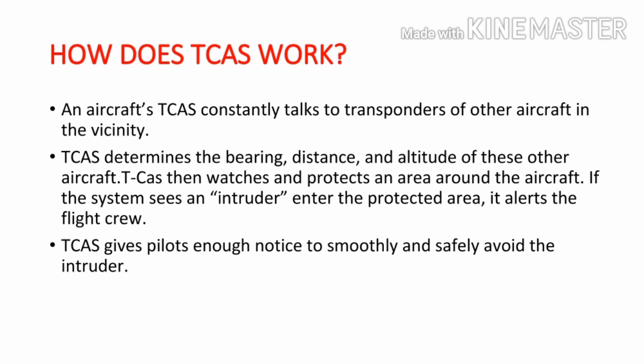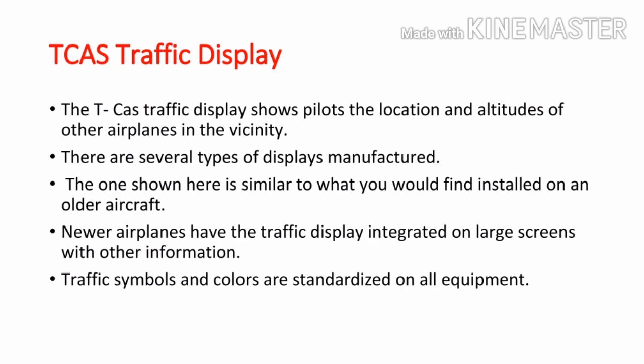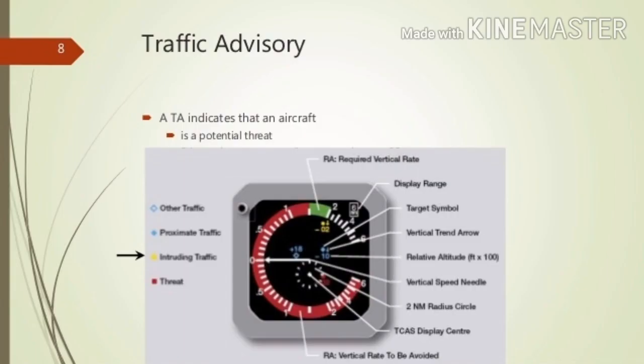TCAS gives pilots enough notice to smoothly and safely avoid the intruder. The TCAS traffic display shows pilots the location and altitudes of other airplanes in the vicinity. There are several types of displays manufactured. The one shown here is similar to what you would find installed on an older aircraft. Newer airplanes have the traffic display integrated on large screens with other information. Traffic symbols and colors are standardized on all equipment.